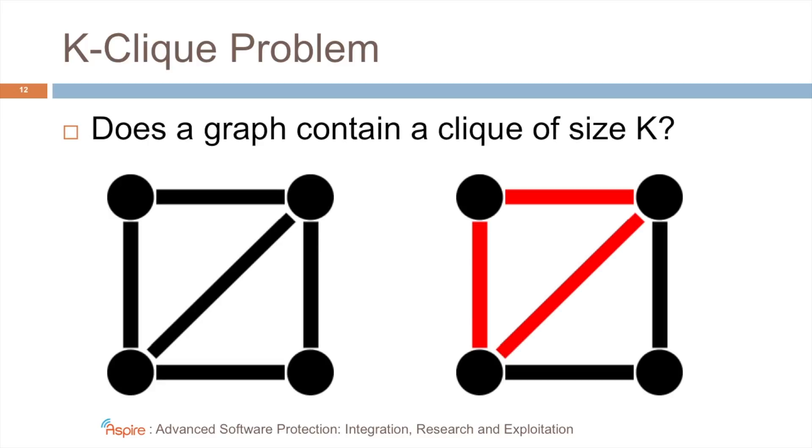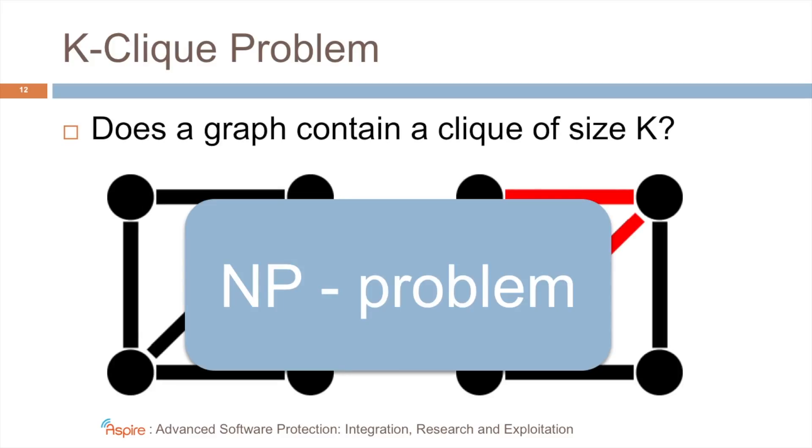In our case, what is this condition? Well, it checks whether a graph contains a clique of size k. This is an NP-complete problem, and we think this is more interesting for our purpose, because contrary to existing techniques, there exist no tools that can automatically analyze the code to solve this problem.